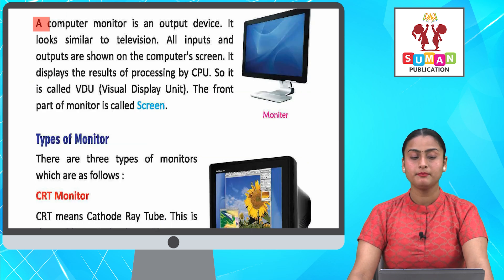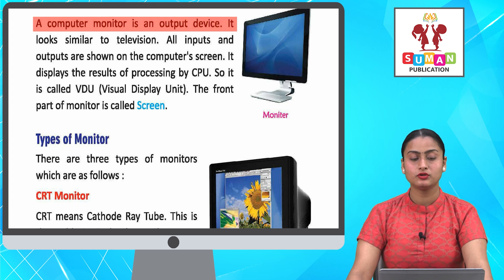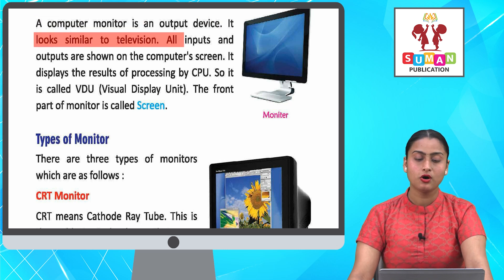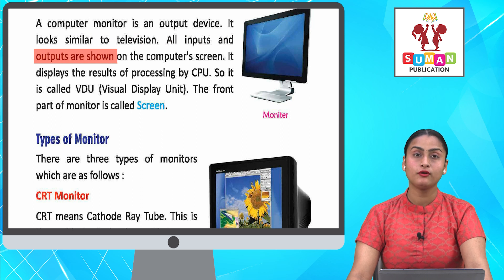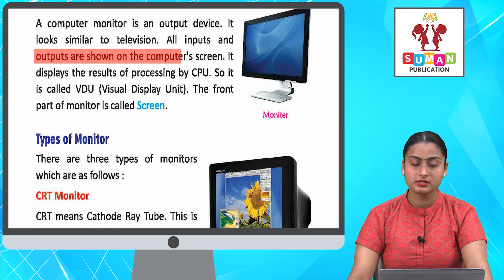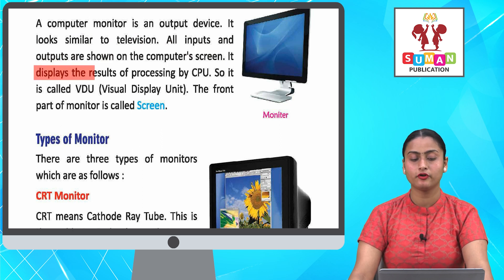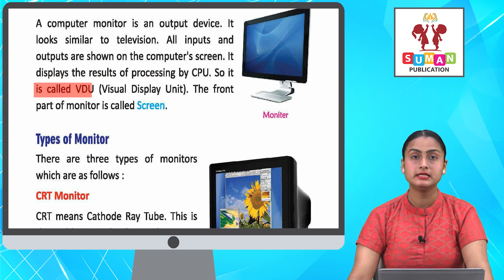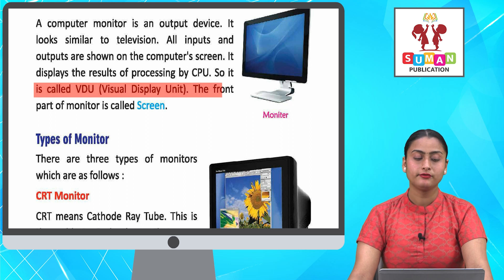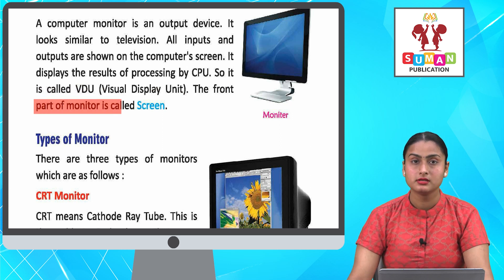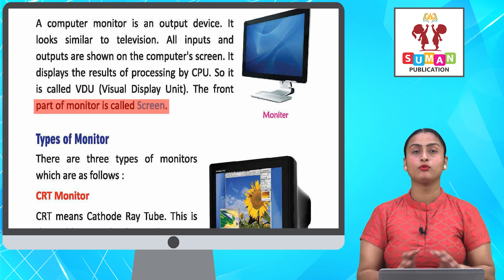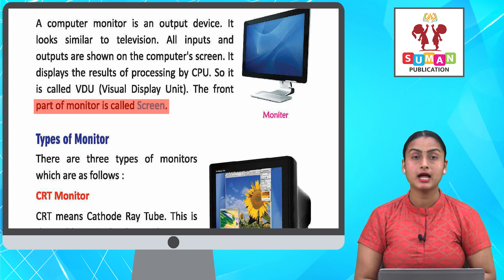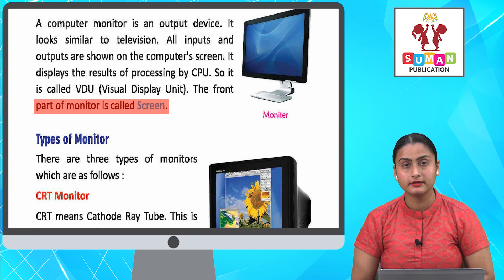A computer monitor is an output device. It looks similar to a television. All inputs and outputs are shown on the computer's screen. It displays the results of processing by the CPU, so it is called VDU — Visual Display Unit. The front part of the monitor is called the screen.